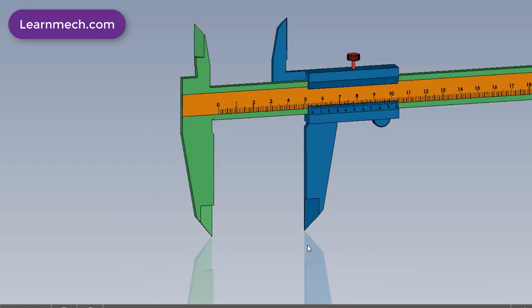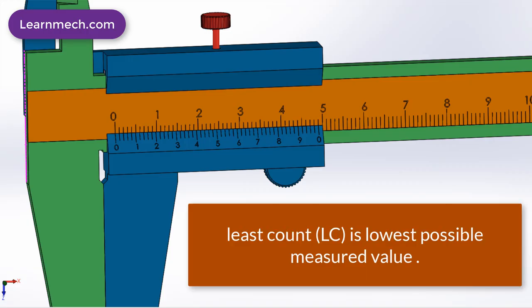Lock screw is used for locking Vernier scale moving body. Least count is nothing but the smallest possible value that can be measured using the instrument.